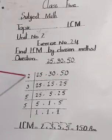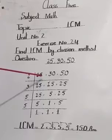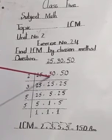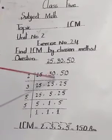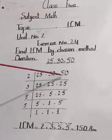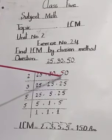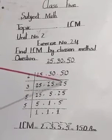We will divide by 2, but 25 cannot divide, so it will come down the same. 30 divided by 2 is 15. 50 divided by 2 is 25.